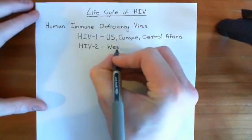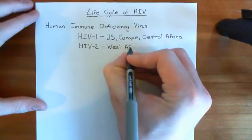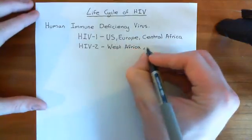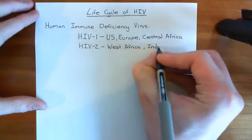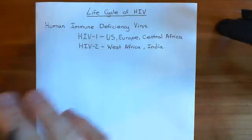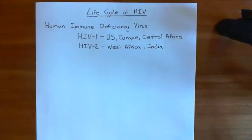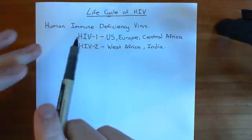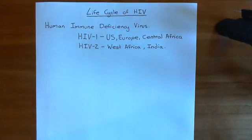HIV-2 is found in Western Africa and also in India. It would be very, very rare to find a case of HIV-2 in the US or Europe. There are a huge number of different types even under this classification - there are many different strains of HIV, and all of them will be categorised either into HIV-1 or HIV-2. Within HIV-1 or HIV-2, there are then lots of different subgroupings.